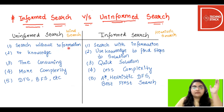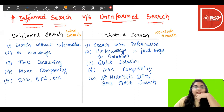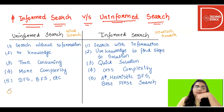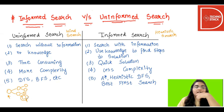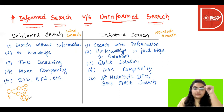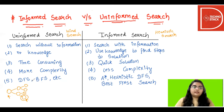The first difference is: uninformed search is search without information, and informed search is search with information. If I have a starting state and need to reach the goal state, in uninformed search I explore all the states using a trial and error method — that is blind search. We don't have information about what steps to take or what to use for searching.